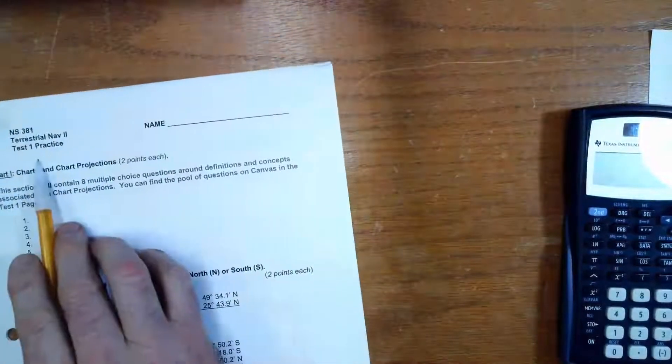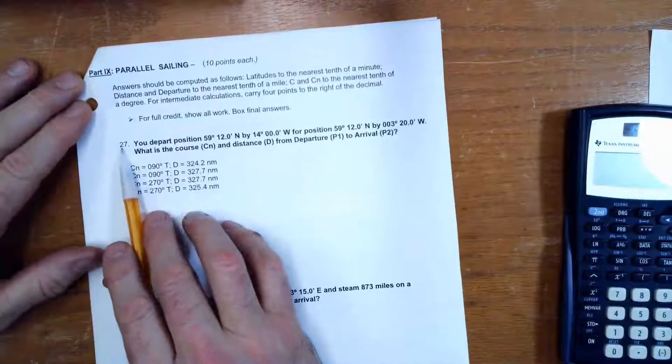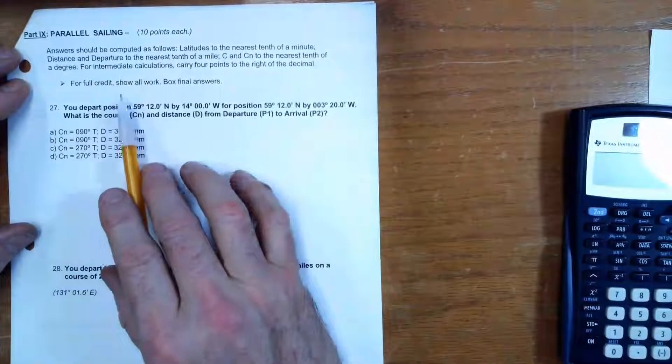Okay, so we're still doing practice test one. I'm going to skip to problem 27, a parallel sailing problem. So here we go.